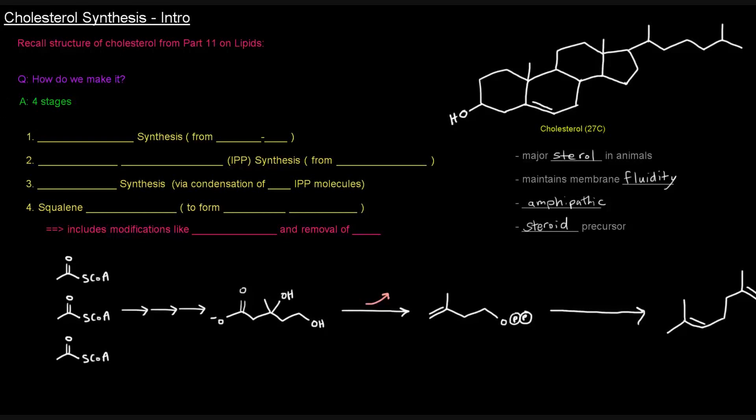Well, there are actually four stages involved in making cholesterol. The first one is mevalonate synthesis. I do want to comment on this and say that they're called stages, not steps, because each stage has many steps. So the first one is mevalonate synthesis, and we're going to be making mevalonate from acetyl-CoAs.